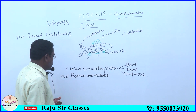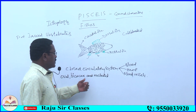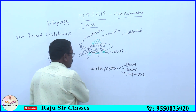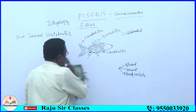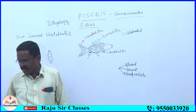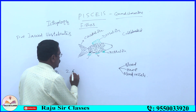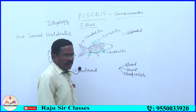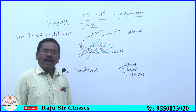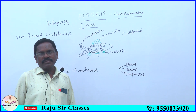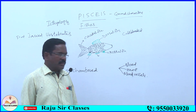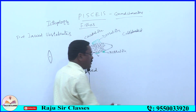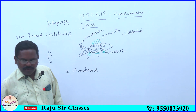Coming to fishes: RBCs are oval, biconvex, and nucleated. The heart is two-chambered — with one atrium and one ventricle. It is a two-chambered heart.